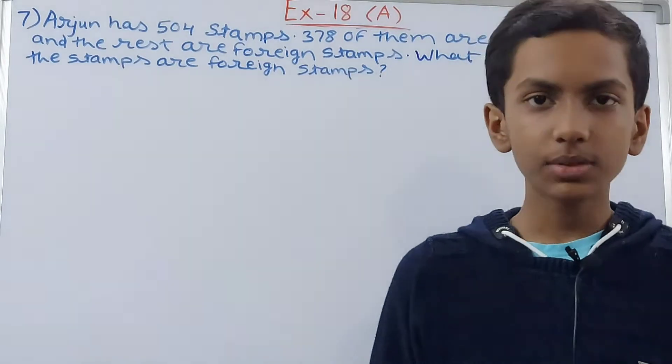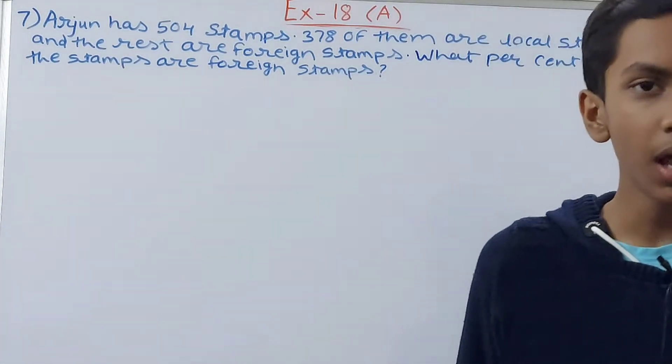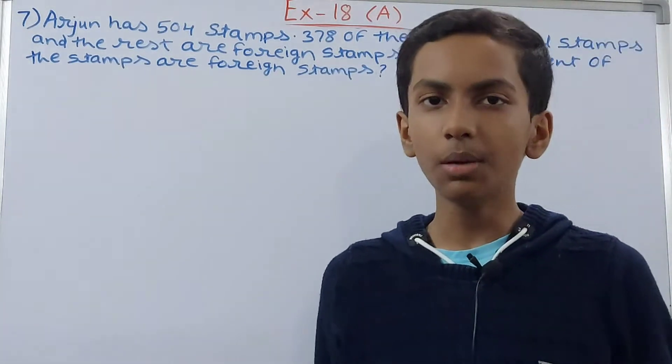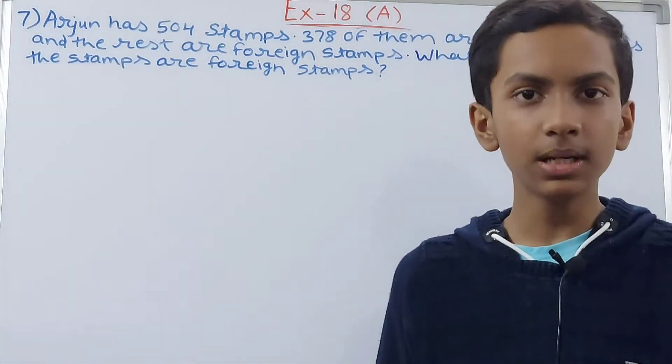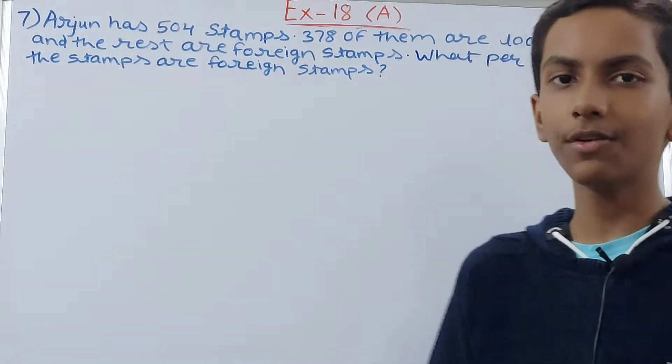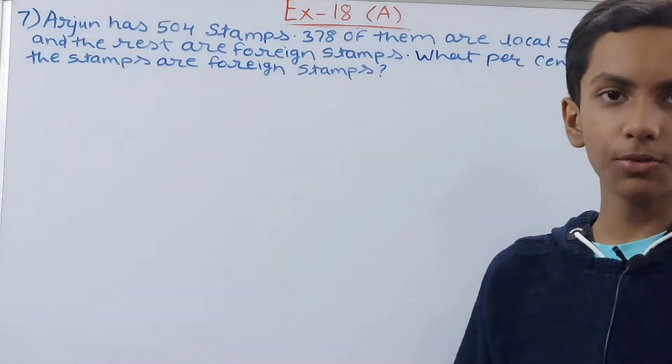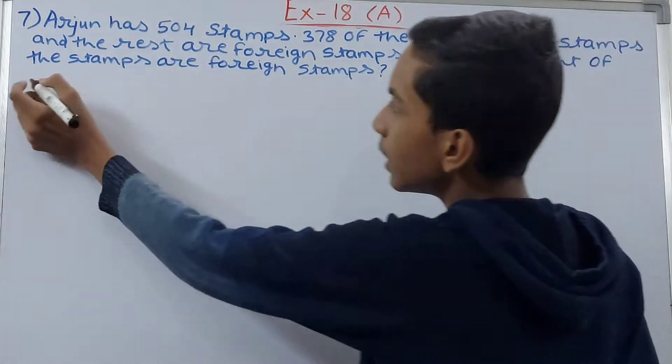We are asked for the percentage of foreign stamps. It's very simple, but first we need to know the number of foreign stamps out of the total 504 stamps. How will we find that? By subtracting the local stamps from the total stamps.